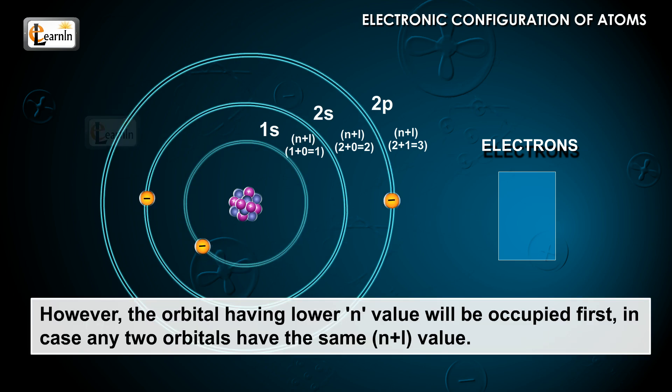However, the orbital having lower n value will be occupied first, in case any two orbitals have the same n plus l value.